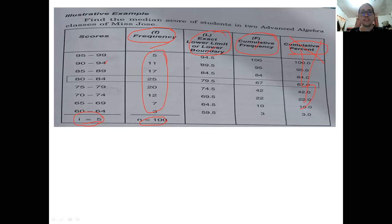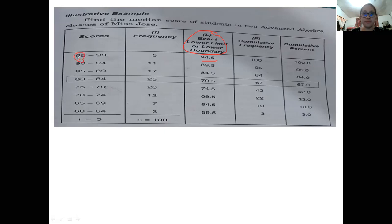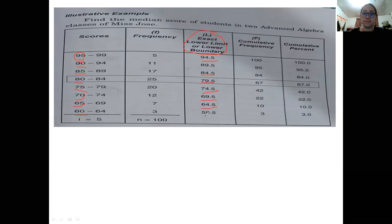To get the exact lower limit or lower boundary, always remember to subtract 0.5 from the lower limit of each class interval. For example: 95 becomes 94.5, 90 becomes 89.5, 85 becomes 84.5, 80 becomes 79.5, 75 becomes 74.5, 70 becomes 69.5, 65 becomes 64.5, and 60 becomes 59.5. That is how you get your exact lower limit or lower boundary.